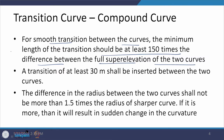What we discussed towards the end was that the minimum length of the transition for smooth transition should be at least 150 times the difference between the full super elevation of the two curves. That is case 2. The third condition is that at least 30 meters must be provided between the two curves, even if the calculated lengths are less than that.